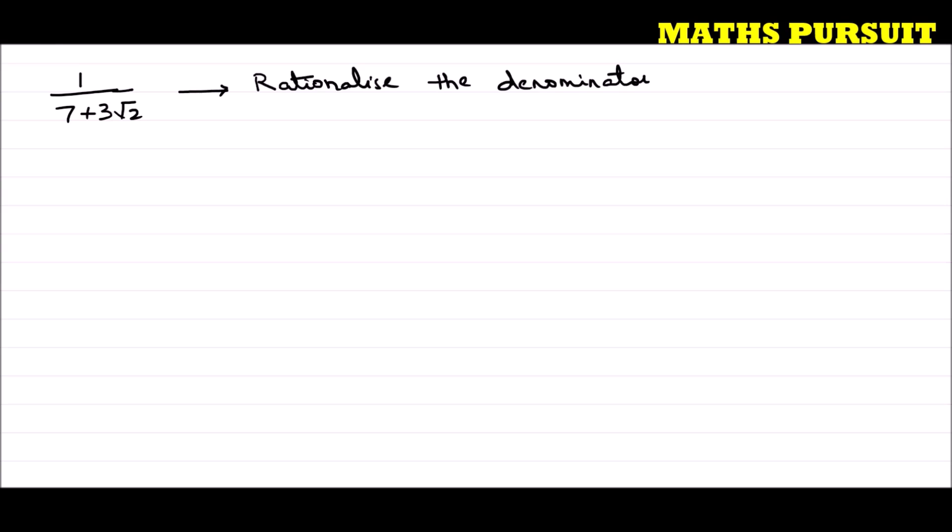Now guys, before moving ahead, let us try to understand what it means by rationalizing the denominator. Rationalizing the denominator means just removing the square root or cube root from the denominator to the numerator — just moving the square root or cube root from the bottom to the top. This is what it means by rationalizing the denominator.